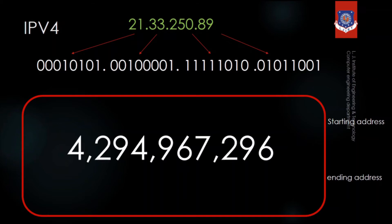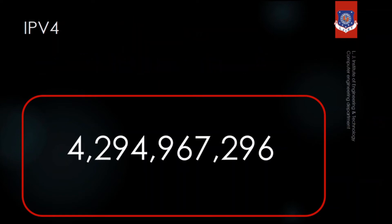But as of 2020 there are a total of 20 billion devices connected to the internet, and if we were still using only IPv4 it wasn't possible to connect that many devices. That is why there is IPv6 — the internet is a combination of IPv4 and IPv6.